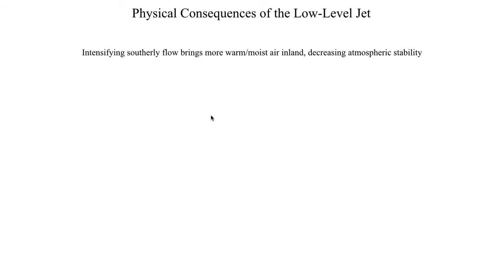Some physical consequences of the low-level jet: with that increasing southerly flow, what's upwind is the warm Gulf water. So a stronger southerly wind brings in richer moisture and more unstable air, significantly decreasing atmospheric stability. You can see this in severe weather events — there's relatively isolated thunderstorm coverage during much of the afternoon and early evening, but once the low-level jet kicks up in the middle of the night, thunderstorm coverage dramatically increases because you're bringing in air that's a lot less stable.